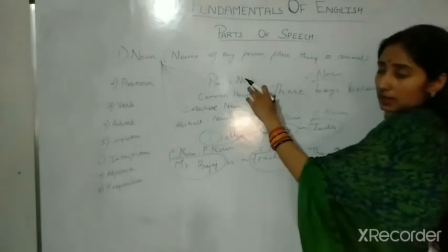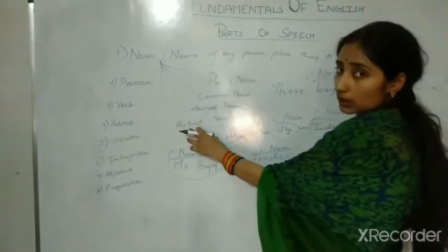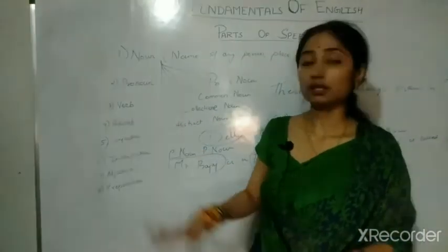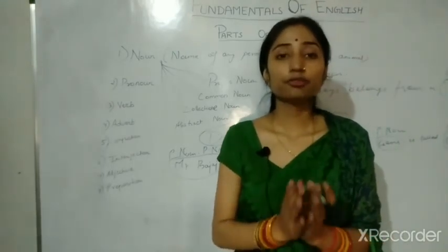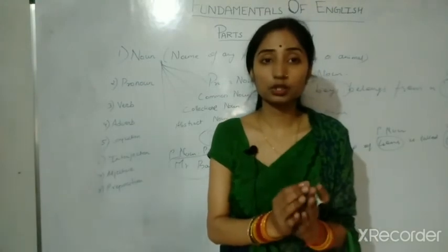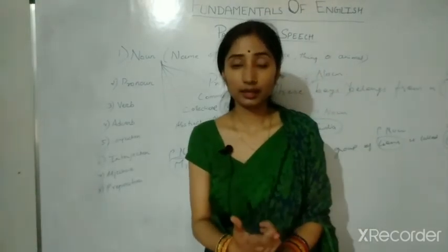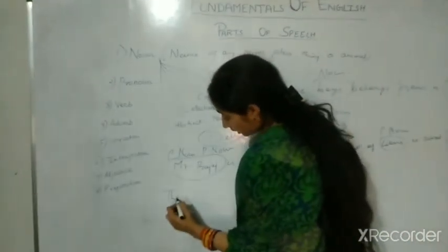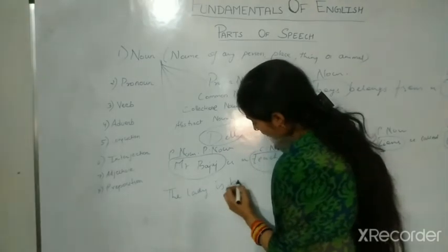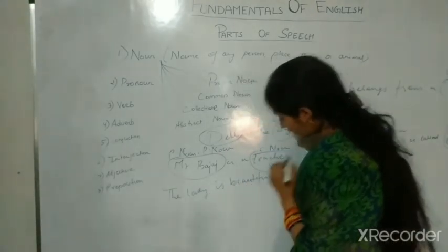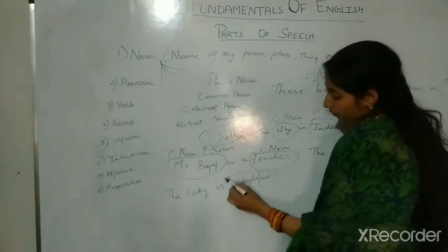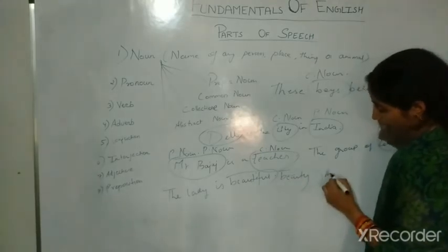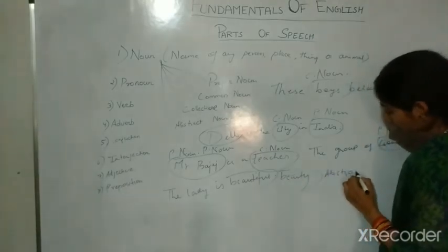Now we will talk about abstract noun. Abstract noun is a little difficult. Abstract noun defines those words which you can feel but you cannot see or touch — only you can feel them. For example, when we say the lady is beautiful, if we convert beautiful into beauty, then beauty is your abstract noun.